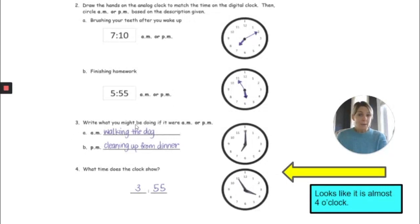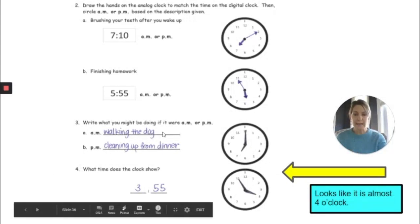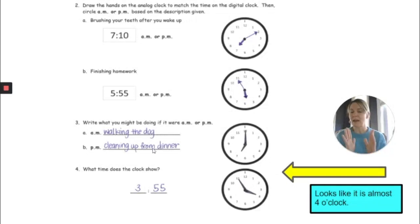For what I might be doing if it were AM or PM, let's check the time. Well, the hour hand is pointing to the 7 and the minute hand is pointing to the 12. So it must be 7 o'clock. So 7 o'clock AM, I am walking my dog because he is ready. And at 7 o'clock PM, if I've gotten everything done for dinner, then by that time, I should be cleaning up or having my family help me clean up.